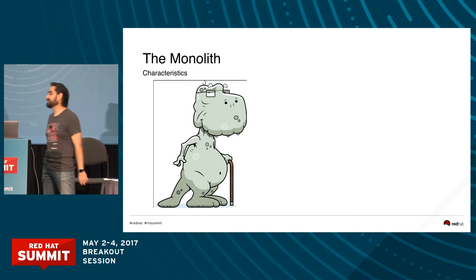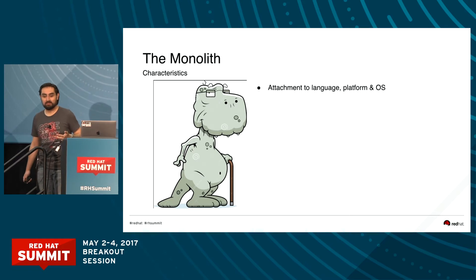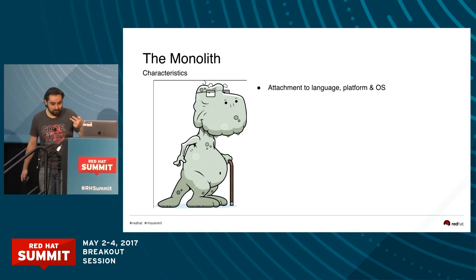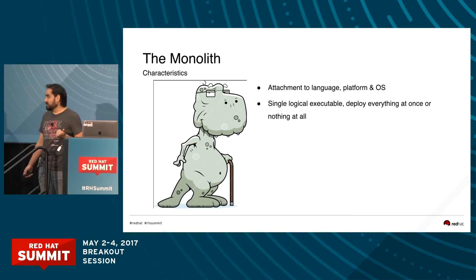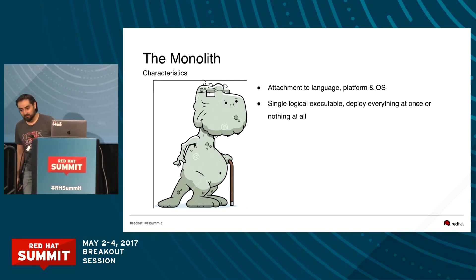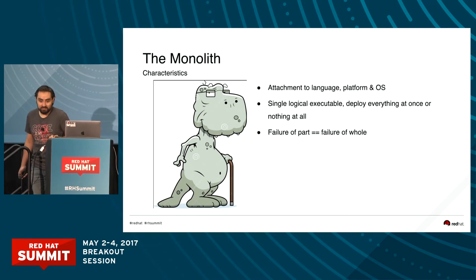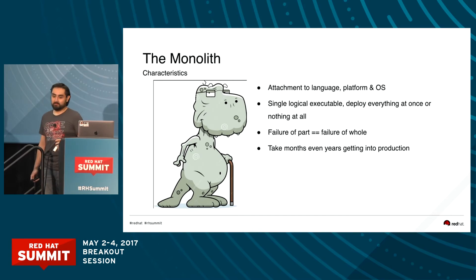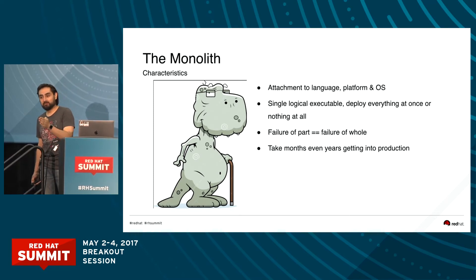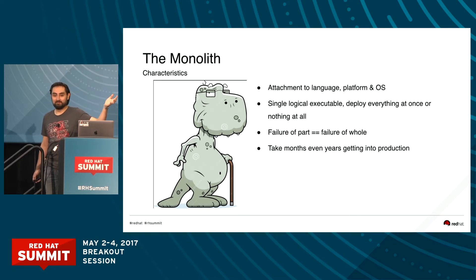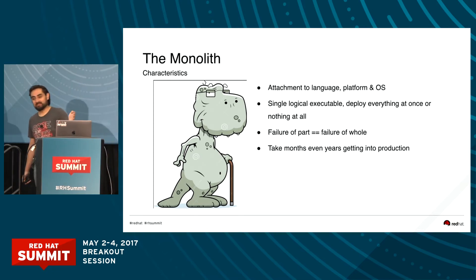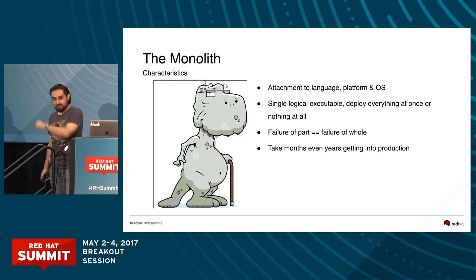Our monolithic has a few characteristics. It's attached to language, platform, and operating system — I even have banks that must have specific OS patches and can't move forward. It's a single executable, so you deploy all or nothing. If one part fails, everything fails. And one of the problems is that it takes months or years to get into production. How many of you have three-month delivery projects? Six months? A year? In the banking industry, it's really difficult.